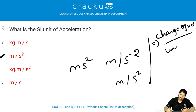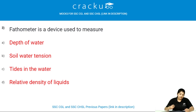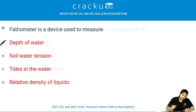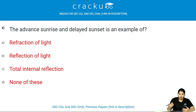A fathometer is the device used to measure the depth of water. The next question: the advent of advanced sunrise and the late sunset is an example of what phenomenon?